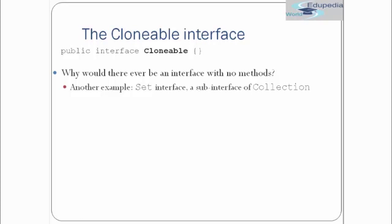The Cloneable interface looks like: public interface Cloneable — it is empty. Marker interfaces are those interfaces which are empty and do not contain any method signature. The empty interface is called a marker interface. Why would there be an interface with no methods? The marker interface's purpose is just to tell the compiler that this class can implement the clone method — it is just marking the class to allow it to implement the clone method.